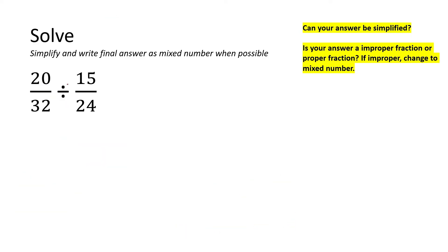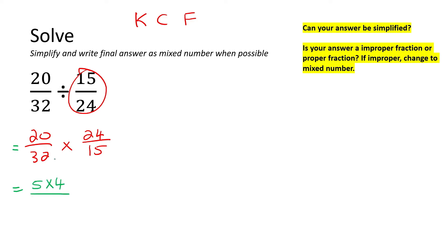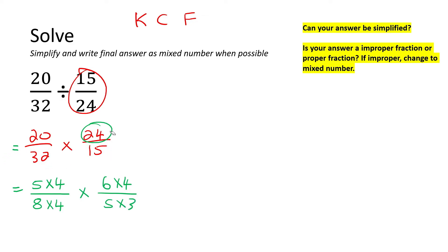With this next example we again have a divide sign. So remember when you're dividing fractions, we use KCF — keep, change, flip. We keep the first one the same, change the sign from divide to multiply, and then flip the second fraction upside down. Now this is where we break the numbers up. For example, I'm going to change this into 5 times 4. Then here I'll say 8 times 4, then 6 times 4, and then 5 times 3. You could have used other combinations, but I think that'll work nicely.